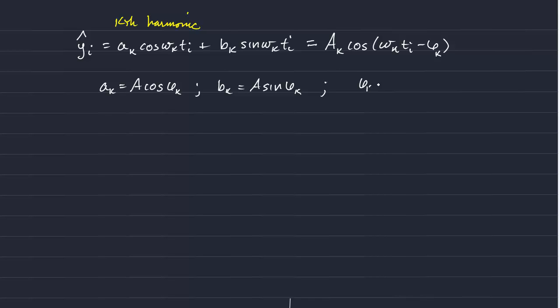Where phi sub k is equal to the arctangent of the ratio of bk over ak.